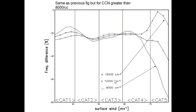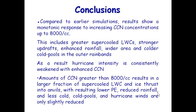Looking at higher CCN, this is really putting out a huge pollution plume. The response turns around and is actually opposite. By 16,000 per cubic centimeter, we're still seeing a weakening of the storm, but the weakening is much less than at 8,000 per CC.